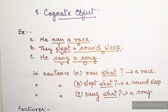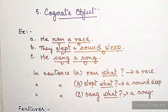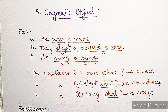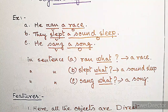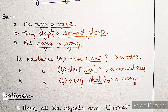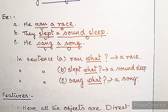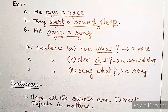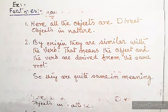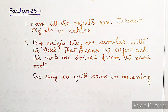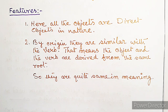A cognate object: examples are 'He ran a race', 'They slept a sound sleep', 'He sang a song.' All these objects are direct in nature. By origin they are similar to the verb — the object and verb are derived from the same root — so they are quite similar in meaning. These are called cognate objects.